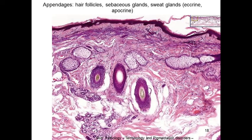There are appendages: the hair follicles, which you can recognize as these structures, and then the sebaceous glands — you can see many of them. And then the sweat glands, which are sometimes found here and there.